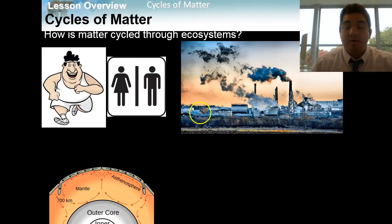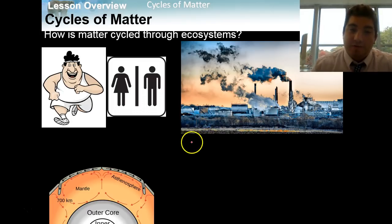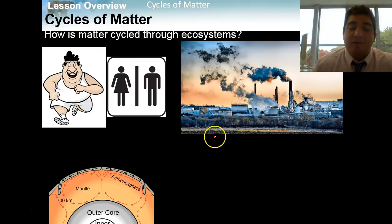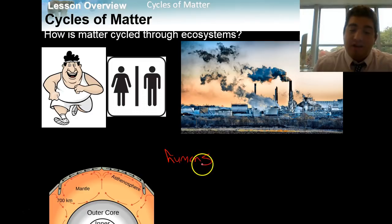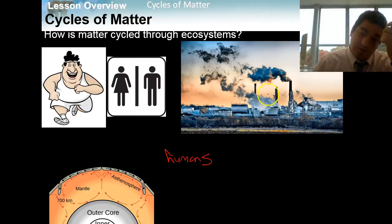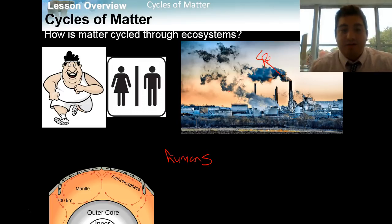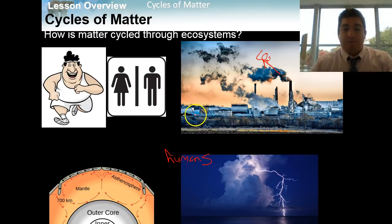The third process is humans. Humans have a huge impact on ecosystems — we build factories, cut down trees, light fires. All these things that humans do are going to cycle matter through the ecosystem. For example, factories let out CO2 into the atmosphere and increase greenhouse gases. So humans cycle matter through.